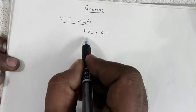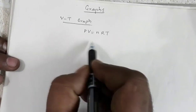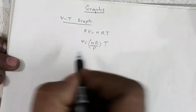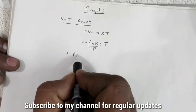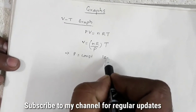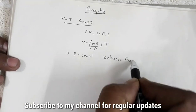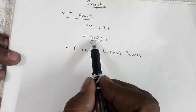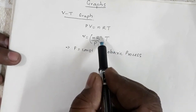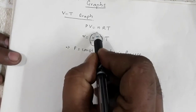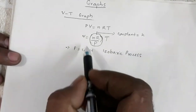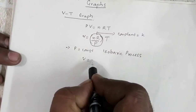The VT graph represents the relation between volume and temperature. This equation can be written as V = (nR/P) × T. If pressure is kept constant, such thermodynamic processes are called isobaric processes. In this equation, n is number of moles, R is universal gas constant. If number of moles is constant, R is already a constant, and if pressure is also kept constant, then this entire term is a constant — let it be equal to K. So we can write this equation as V = KT.